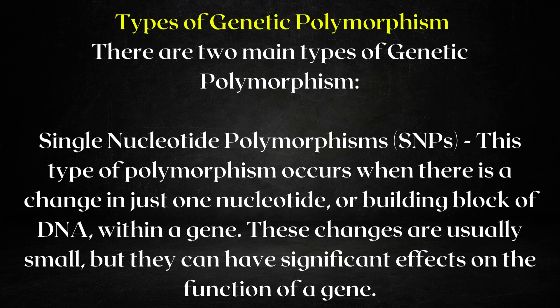Now let's move to section 2: types of genetic polymorphism. There are two main types of genetic polymorphism. The first one is single nucleotide polymorphism, also known as SNPs. This type of polymorphism occurs when there is a change in just one nucleotide, or building block of DNA, within a gene. These changes are usually small but they can have significant effects on the function of a gene.